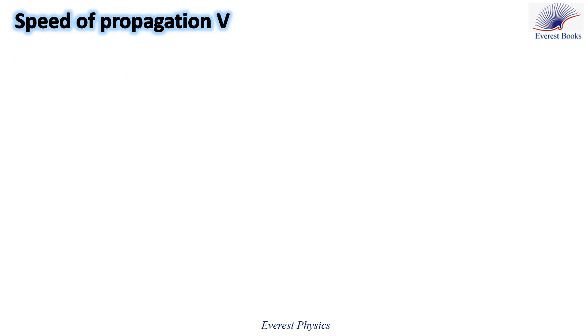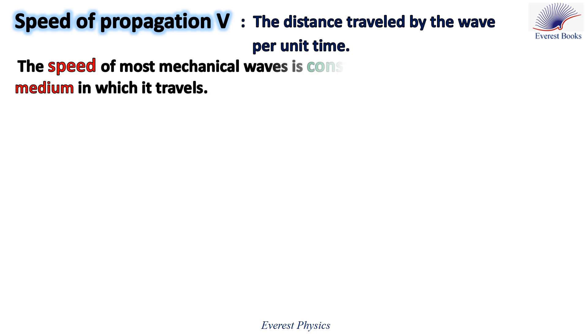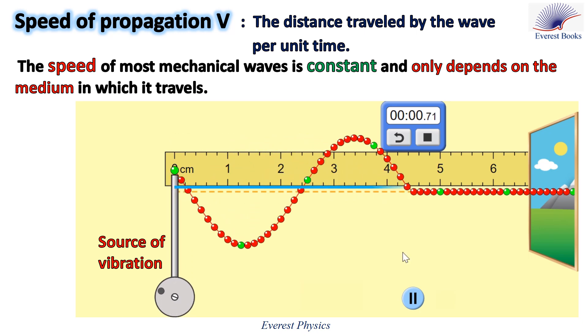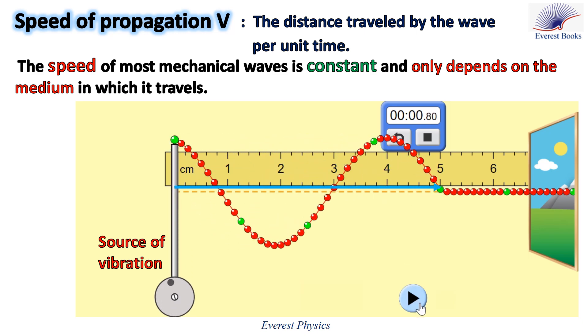The fourth property of the wave is the speed of propagation, which is the distance traveled by the wave per unit time. The speed of most mechanical waves is constant and only depends on the medium in which it travels. Observe this PHET animation. We observe that the wave travels 5 centimeters in 0.8 seconds. Then the speed of the wave is 5 centimeters over 0.8 seconds, which equals 6.25 centimeters per second.